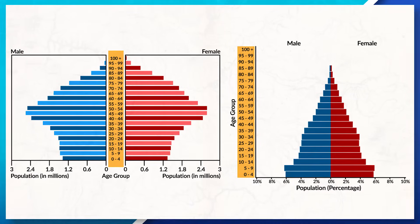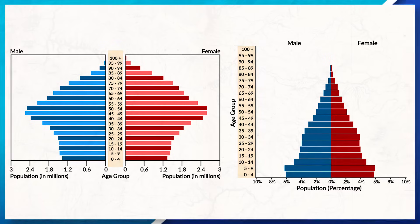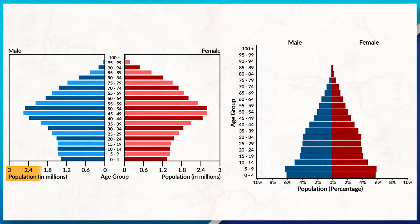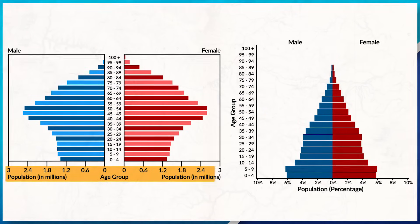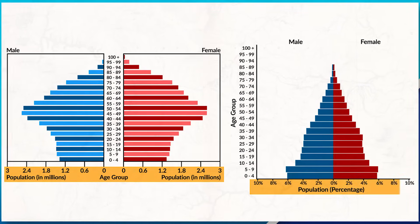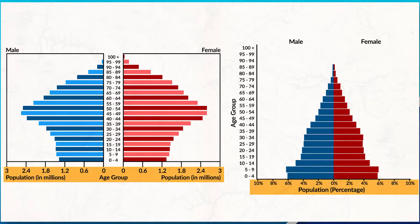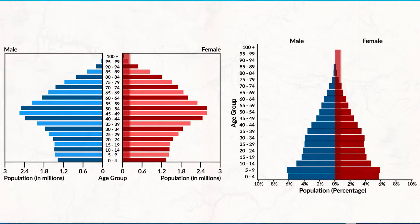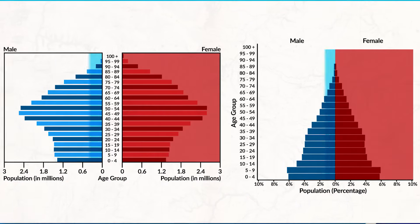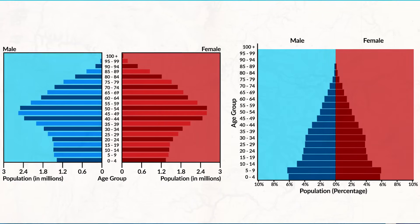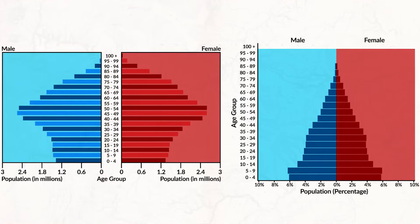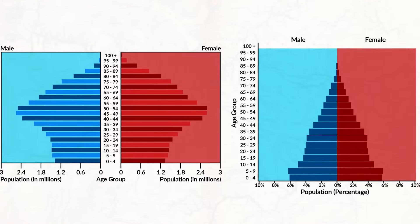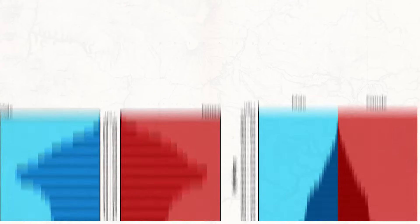On the X-axis, we can see the amount of people, which is either shown with an exact number or presented as a percent. You will also notice that there are two sides to the population pyramid — one for women and one for men. These two bars show the two sexes of a society, and each bar is connected to a specific age range and sex.